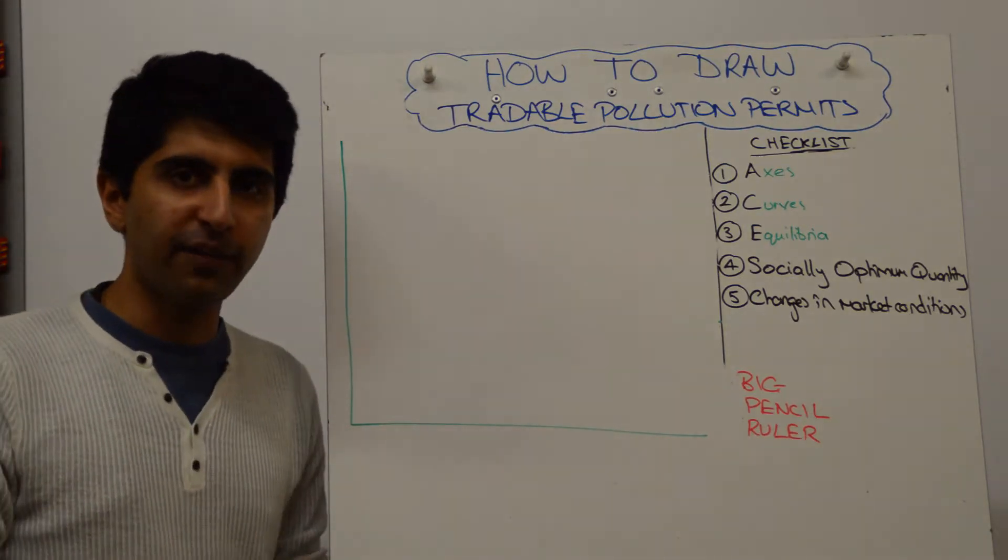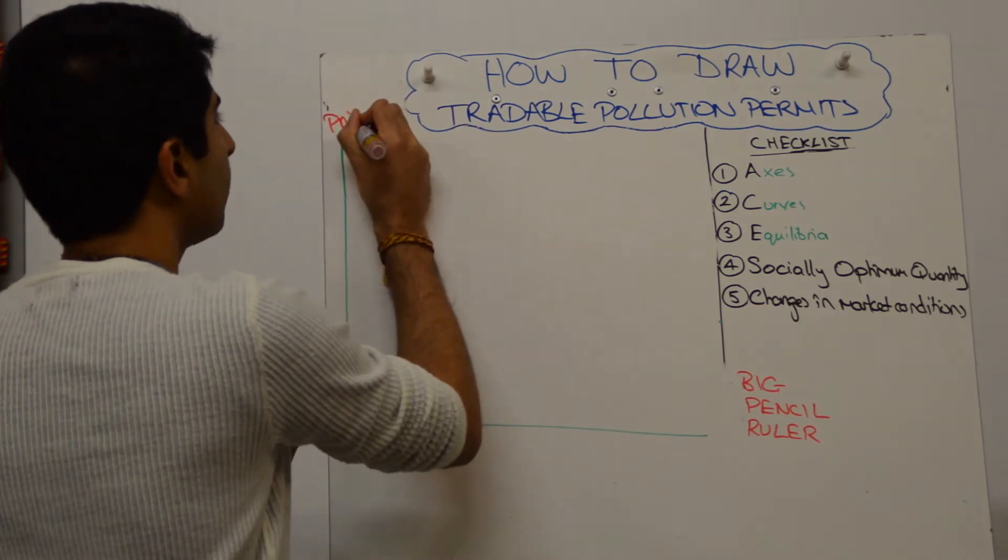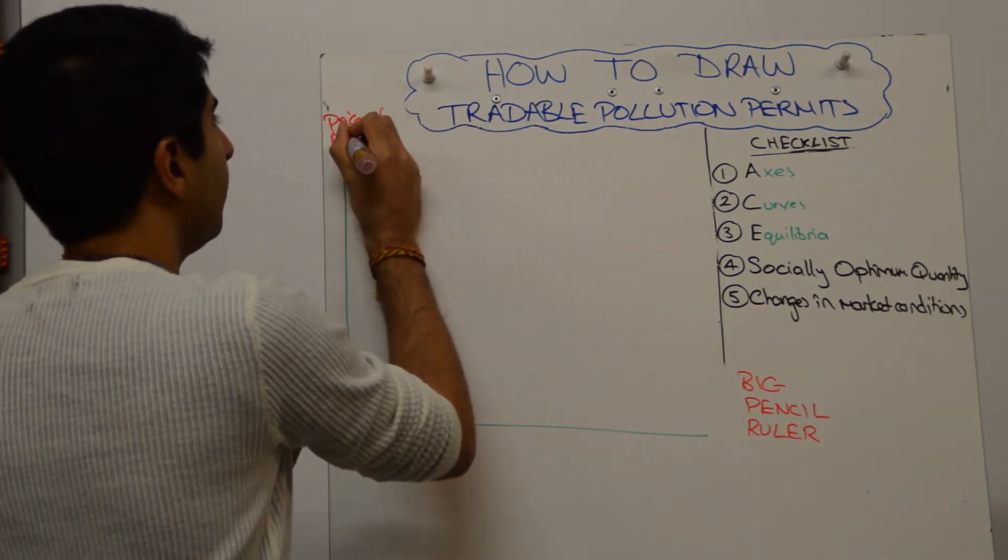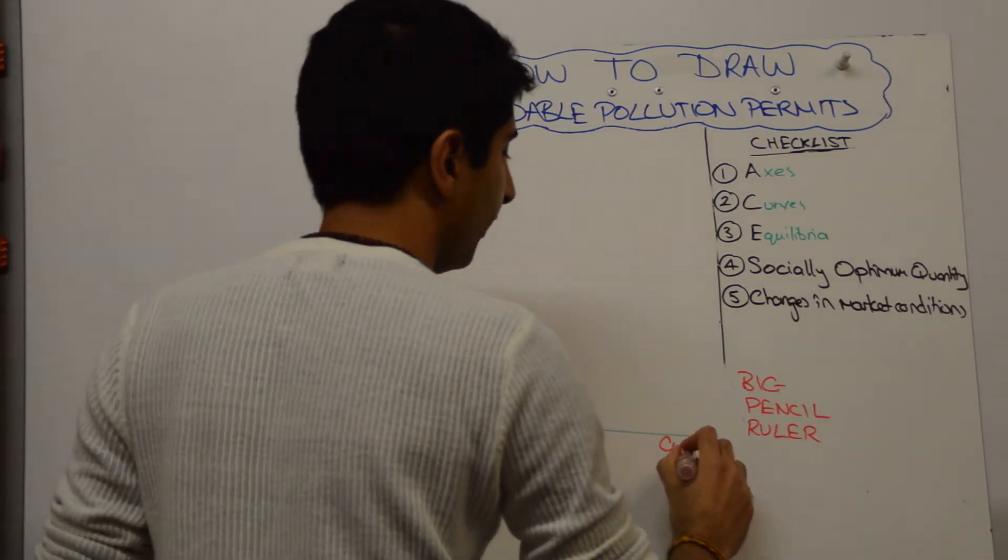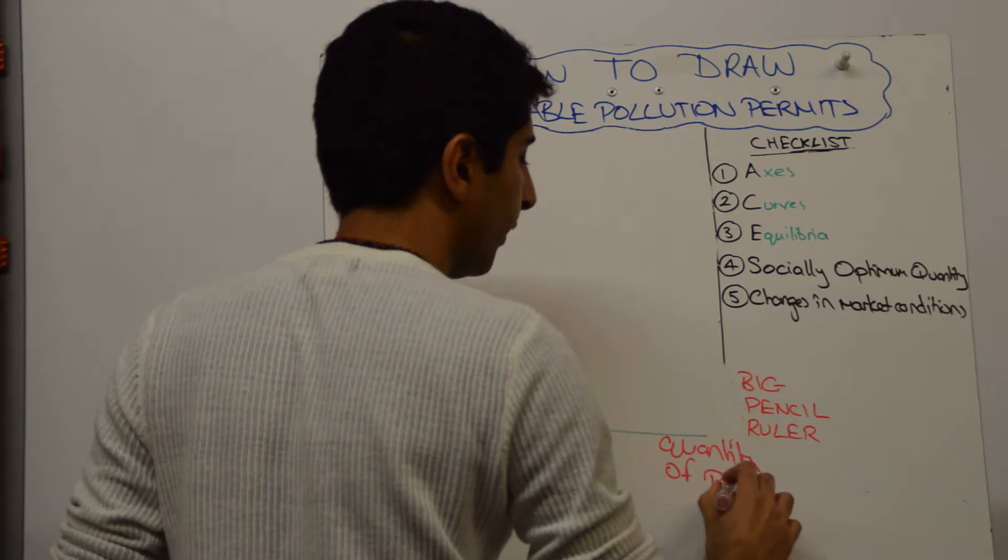So this is not necessarily a market failure-related diagram. All we need to draw here is the price of permits and the quantity of permits. That is the market we are focusing on here.